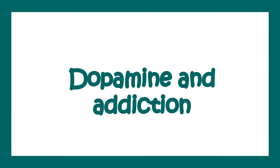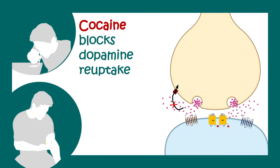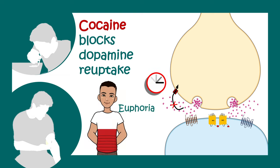Dopamine is also associated with addiction. Cocaine addiction, for example, works because cocaine blocks the reuptake of dopamine, causing dopamine to persist in the synaptic cleft for a long time, giving a euphoria-like feeling. That's why you get a craving for more and more cocaine — and that's how addiction develops.